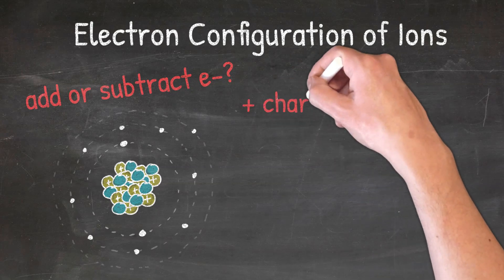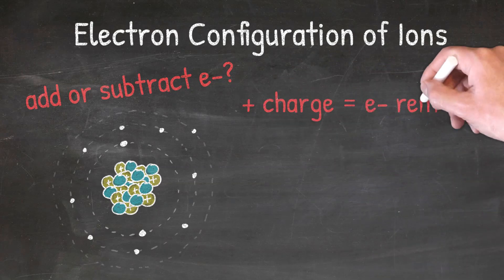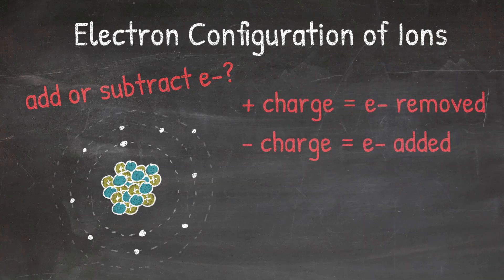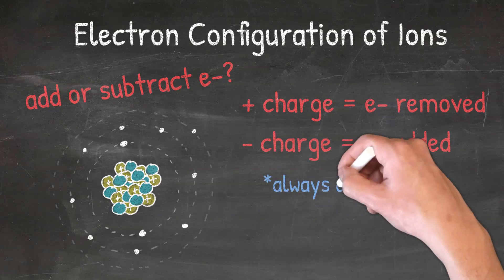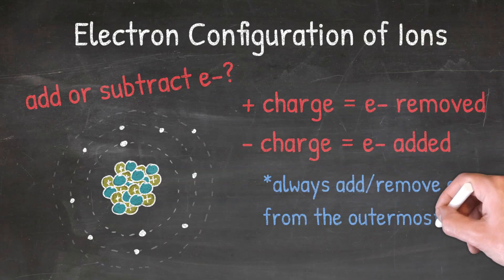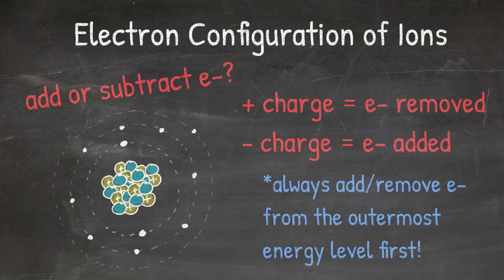If the charge is positive then that means electrons are removed, and if the charge is negative then that means electrons were added. Once you know if electrons were added or taken away, all you have to do is add or remove electrons from your electron configuration for the atom. The key rule to remember is you always add or remove electrons from the outermost energy level first.